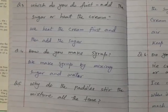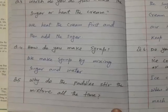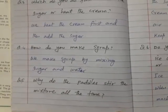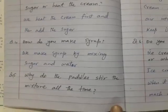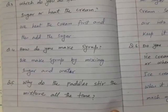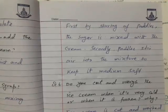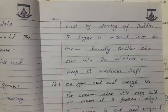Third question is which do you do first, add the sugar or heat the cream? We heat the cream first and then add the sugar. Fourth one, how do you make syrup? We make it by mixing sugar and water. The fifth one, why do the paddles stir the mixture all the time? First, by stirring of paddles the sugar is mixed with the cream. Secondly, paddles stir air into the mixture to keep it medium soft.